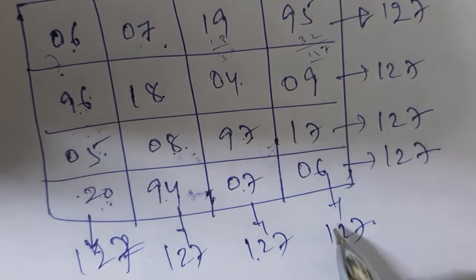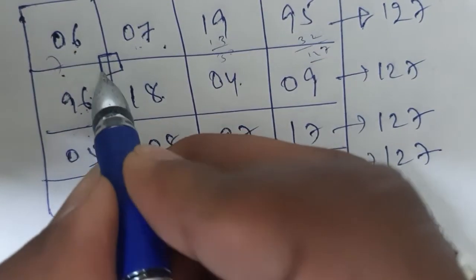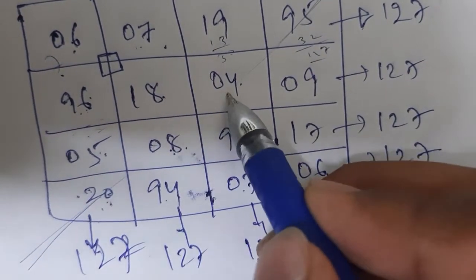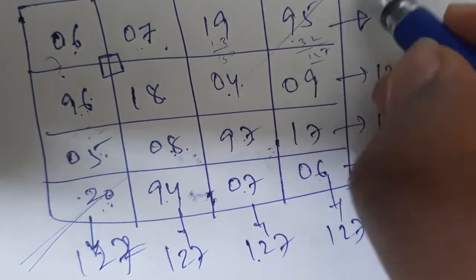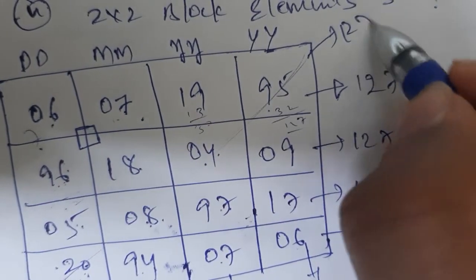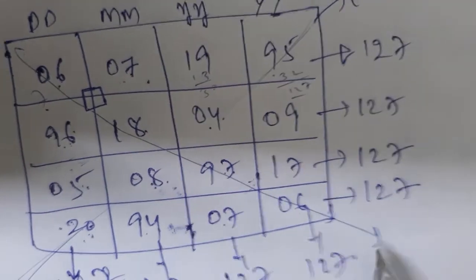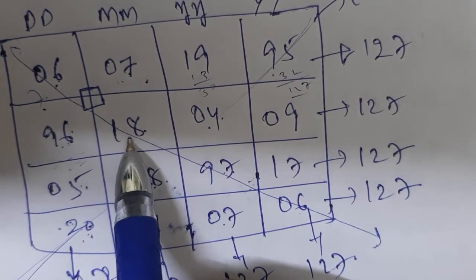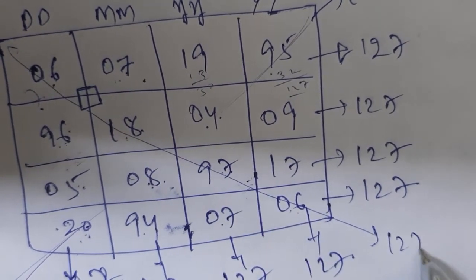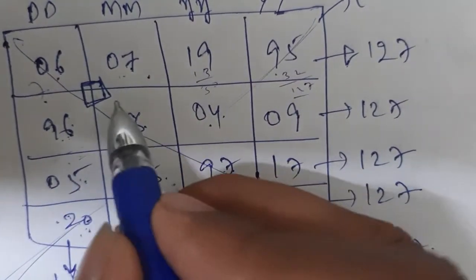Now let us consider the diagonal elements. The main diagonal: 28 plus 4 is 32, plus 95 equals 127. And the other diagonal: 6 plus 8 is 14, plus values gives 127 as well. Both diagonals sum to 127.